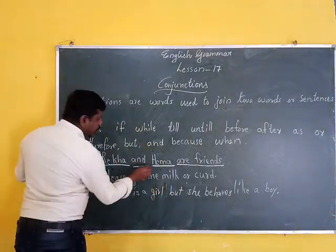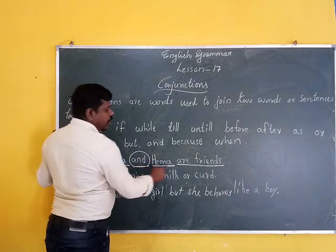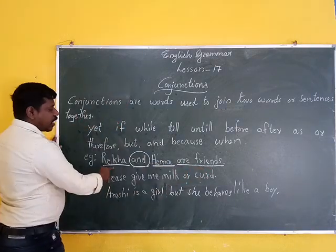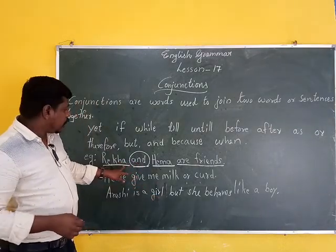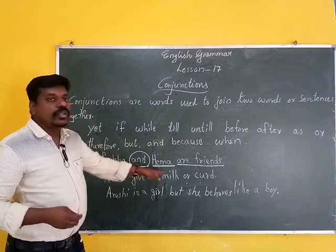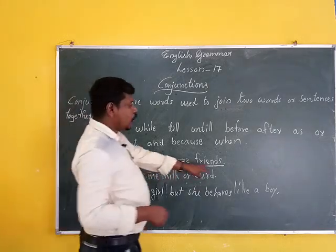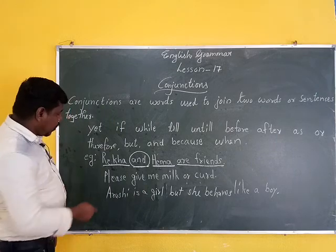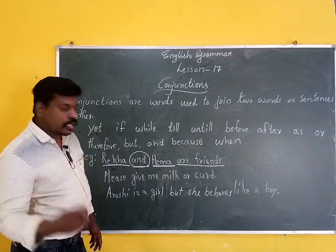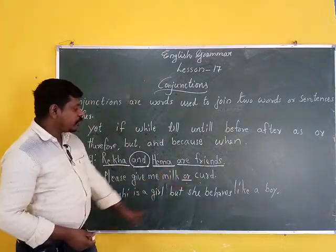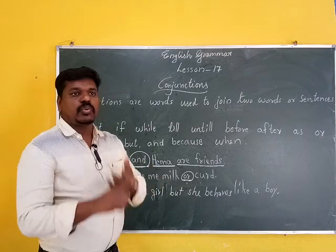For example, the Conjunction 'and': Rekha and Emma are friends. Here the Conjunction 'and' is used to join the two words or two sentences together.